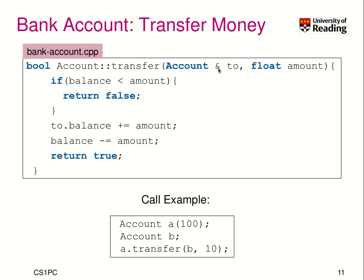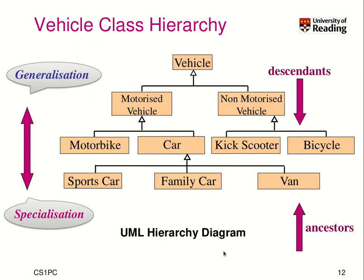It is very important to use call by reference here. Because if you use call by value, a copy of object B would be created, and to this copy we would have added the amount of money. But after we leave the scope of the function, we would have destructed this object — so the money would be transferred to Nirvana, so to speak. Try it out if you like. This is really an important concept.